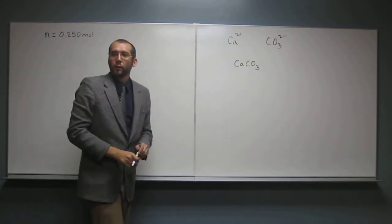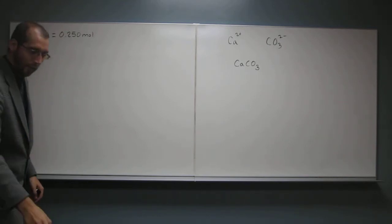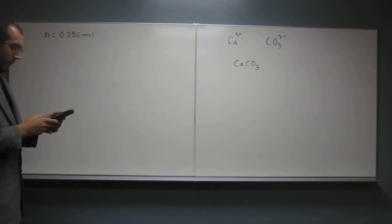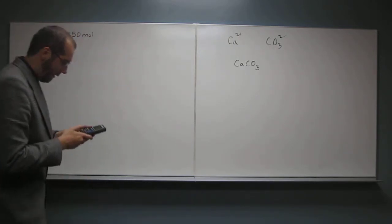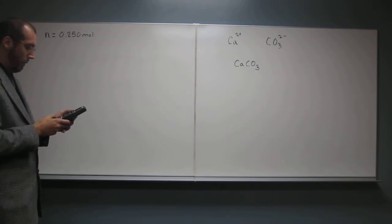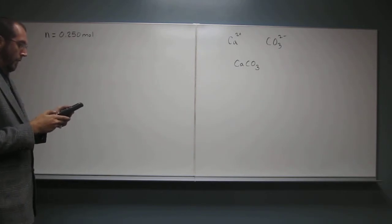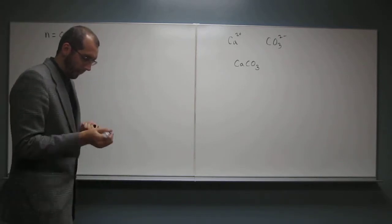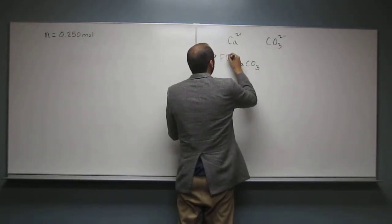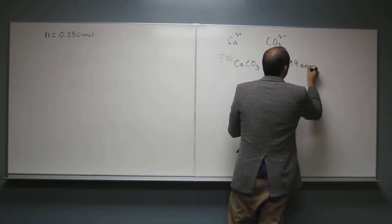Now we have to add the atomic mass of each one of them, and that gives us the formula weight of the total thing. So we look at our periodic table — calcium is 40.08. I don't have a periodic table in front of me, so if I get one wrong, tell me. Carbon is 12.01 and oxygen is 16.00. So the formula weight of this is going to be 100.09 AMU.